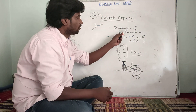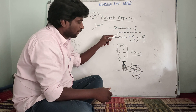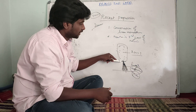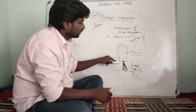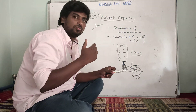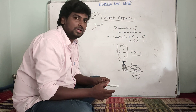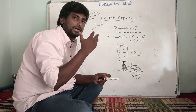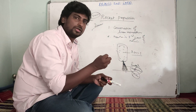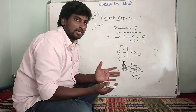Now, this is based on the conservation of linear momentum — every action has an equal and opposite reaction. Gases come out as the action, and the rocket's thrust is the reaction. The mass decreases and the velocity increases according to the conservation of linear momentum, resulting in an increase in altitude.